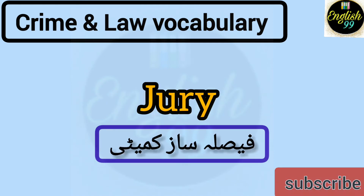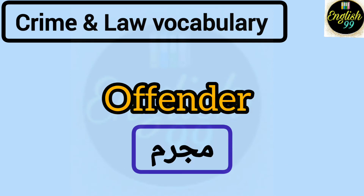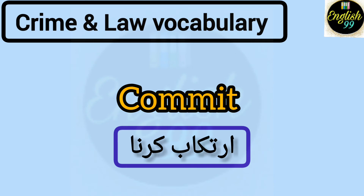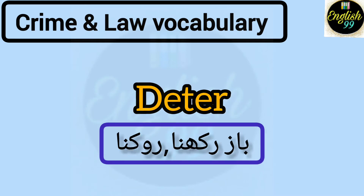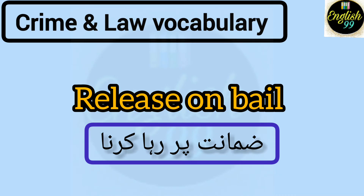Convict kehte hain mujrim qarar dena — yaani jis ko uski saza suna di gayi ho. Jury kehte hain faisla saaz committee ko, yaani panchayat ko. Qanoon saazi ko kehte hain legislation. Mujrim ya gunahgar ko English mein kehte hain offender. Irtkaab karna — isi English mein kehte hain commit. Rok tham karna — isi English mein kehte hain prevention.